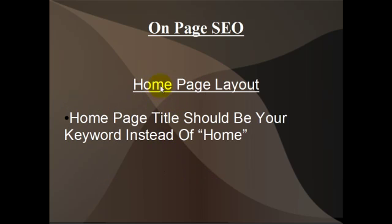This leads me on to the homepage layout. Your homepage title should be your keyword instead of 'home'. If you set up a custom menu, when you create the page, it would be 'weight loss home' or just 'weight loss', and then go into your settings and set that page as the static page. So when people come to the site, that's the first page they see, and that becomes your homepage. You've got a bit of an advantage with the SEO because you've got your keyword in the homepage title.